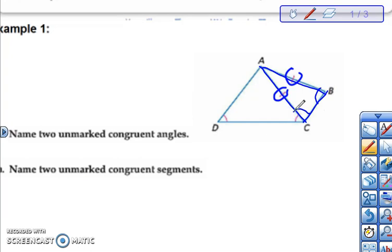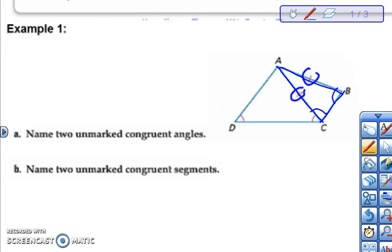So we're going to do is just mark the angles that are opposite the two congruent sides. So the two angles that we know to be congruent even though they weren't marked are angle ABC and angle ACB.